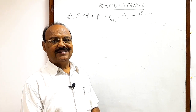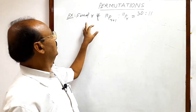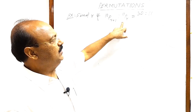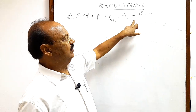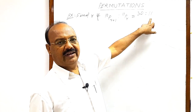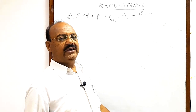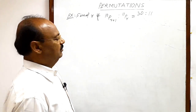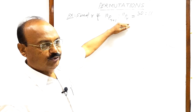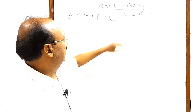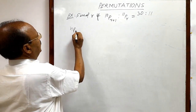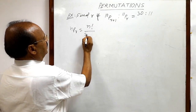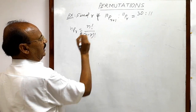Here in the topic of permutation, let us see the problem. Find R if 10PR+1 is to 11PR is equal to 30 is to 11. In the previous video, we have already discussed the formula for permutation, and that formula is NPR is equal to N factorial divided by (N minus R) whole factorial.